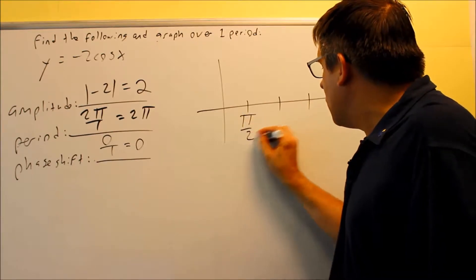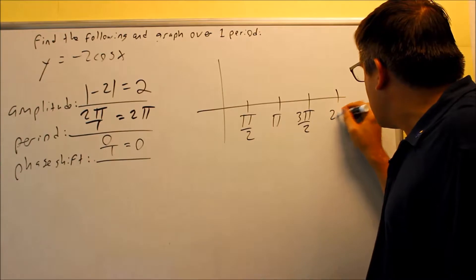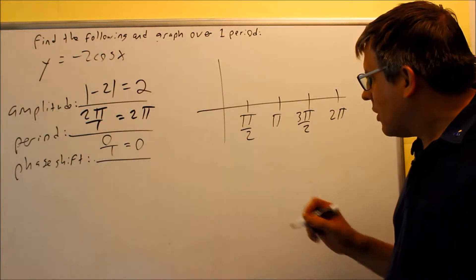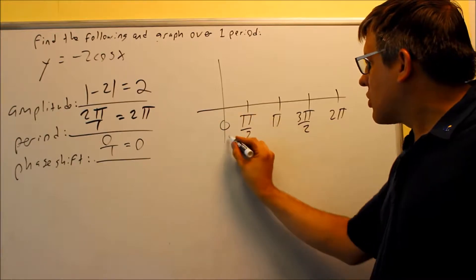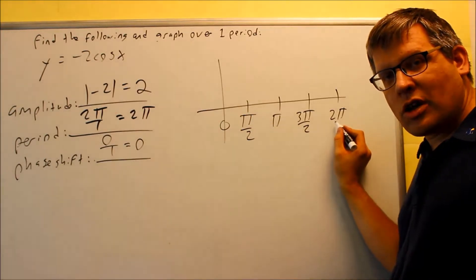So I have pi over 2, pi, 3 pi over 2, and 2 pi. These are all the original key points that I had before. The period is the distance from 0 to 2 pi. That length right there is 2 pi. That would be for one cycle.